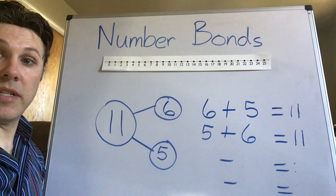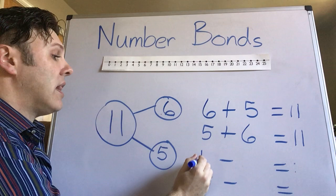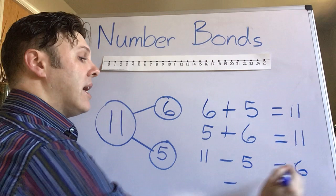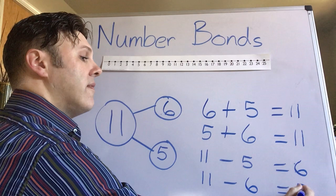And when I get to the subtraction, I know to always start with this big number first. Eleven minus five equals six. And eleven minus six equals five.